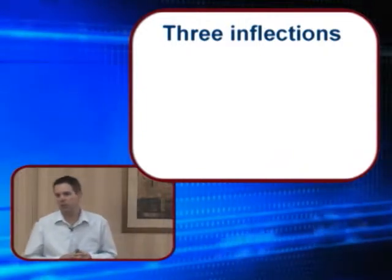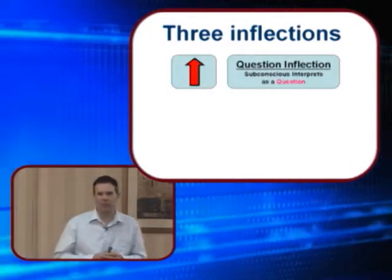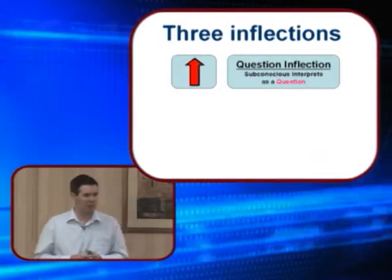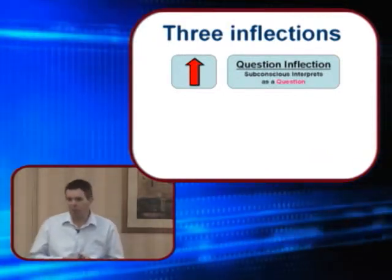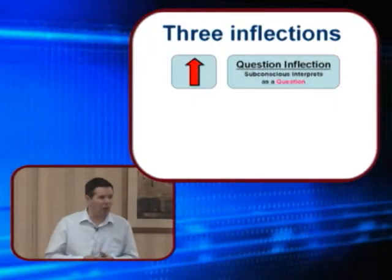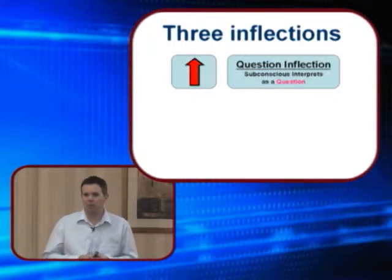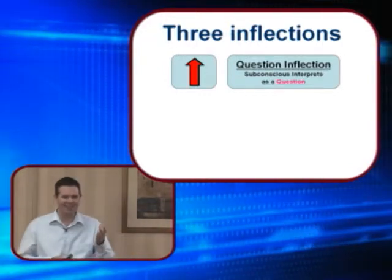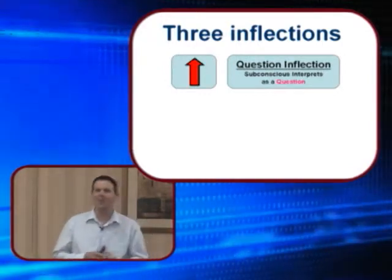There are three types of inflections. You could up-inflect at the end of every sentence and it'll sound like you're asking a question when you might be making a statement — like 'one day at band camp we played the clarinet' — like that lady from American Pie. If we talk with an up-inflection, it actually raises doubt in other people's minds when we want to sound certain.